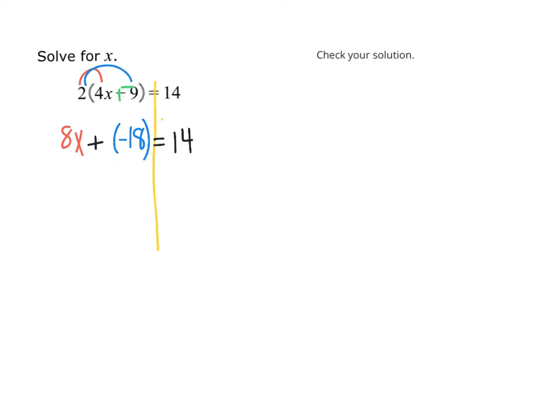So, I want to get rid of that negative 18. And I'm going to do that by adding positive 18. But what I do to the left, I must do to the right. And now, I have 8x equals 32. And final step is divide by how many x's we have in this problem. And so, we have x equals 4.